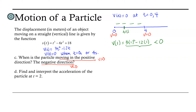Now let's test our other interval, from 4 onward. Let's test something nice and easy to work with, like t equals 10. Velocity at 10 is 3 times 10 squared minus 12 times 10. The first term is 300 minus 120 — 300 is definitely greater than 120, so this is clearly positive. On this interval, the velocity is positive.